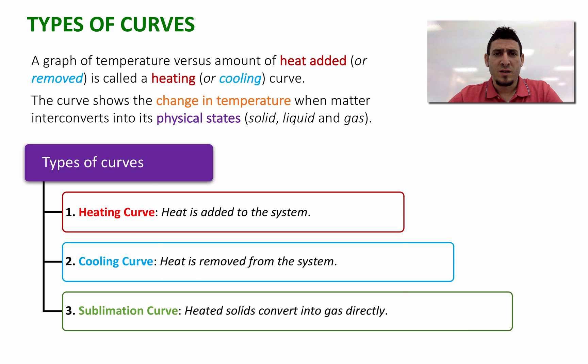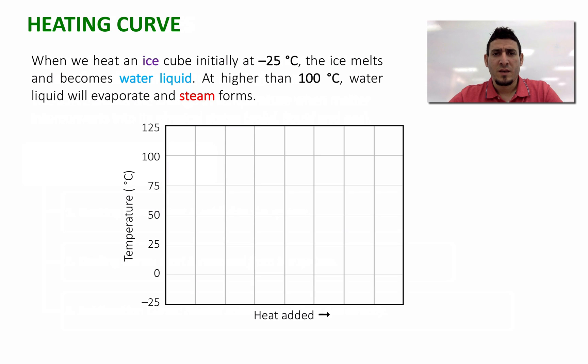Let's first start discussing the heating curve. When we heat an ice cube initially at minus 25 degrees, the ice melts and becomes water liquid. At higher than 100 degrees, water liquid will evaporate and steam forms. So we can record the following curve where we can see the change in temperature when heat is added to water.